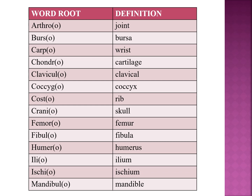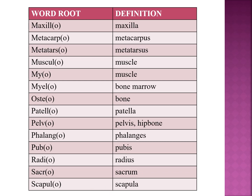Ortho means joint; bursa means bursa; carpo means wrist; chondro means cartilage; claviculo means clavicle; coxo means cox; costo means rib; cranium indicates skull; femoro indicates femur; fibulo indicates fibula; humero indicates humerus; ilio indicates ileum; ischio indicates ischium; mandibulo indicates mandible; maxillo indicates maxilla; metacarpo indicates metacarpus; metatarso indicates metatarsus; musculo indicates muscle; myo also indicates muscle; mylo indicates bone marrow.